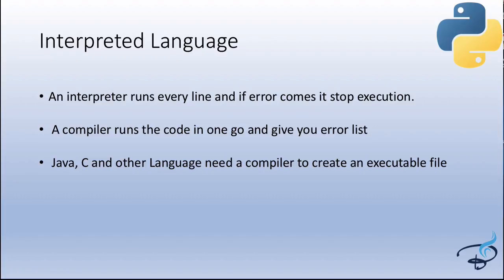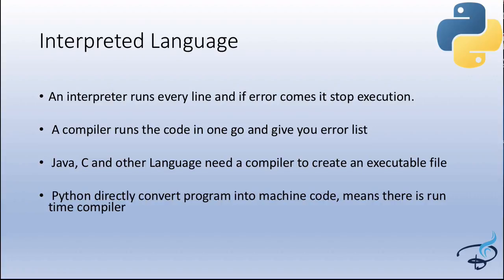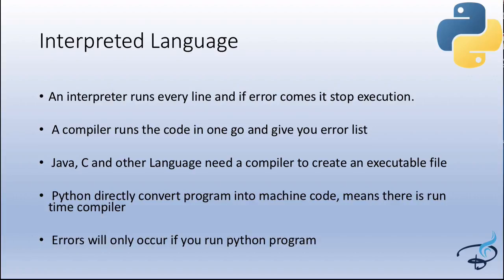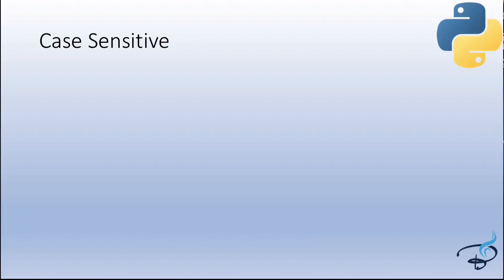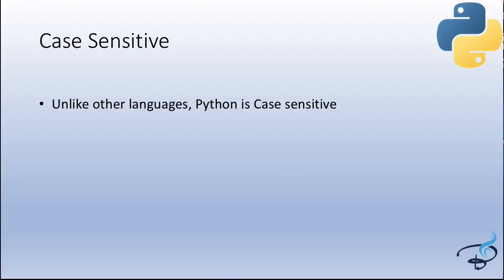Java, C, and other languages need a compiler to create an executable file — you have code, a compiler, then an executable file. That is not the case in Python, because Python directly converts your program into machine language. There is a kind of runtime compiler, but essentially there is no separate compiler — errors only occur when you actually run the program.